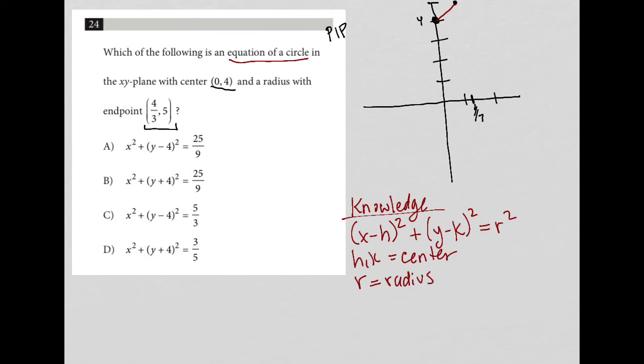So we're given the center at (0, 4). That means h equals 0 and k equals 4. So that means our generic circle equation can be restated as x² + (y - 4)² = r². Why just x? Because h was equal to 0, so that's gone. Based on this information, we could just go on and cross out choices B and D because both of those choices have y + 4 instead of y - 4.